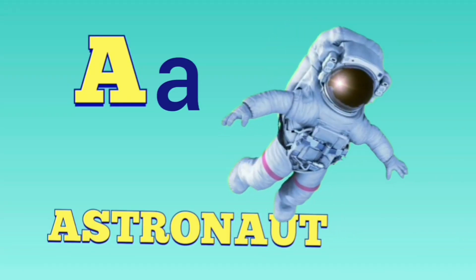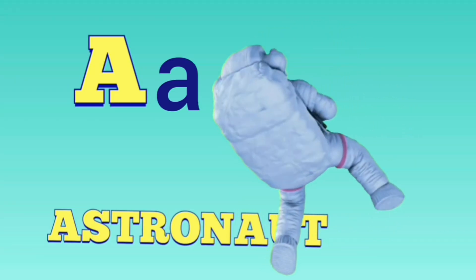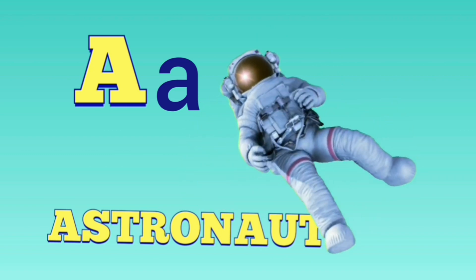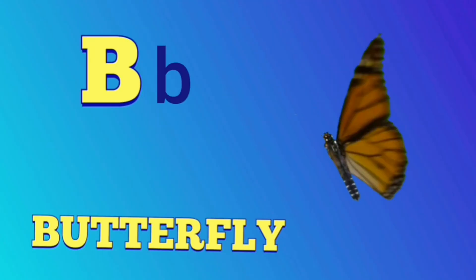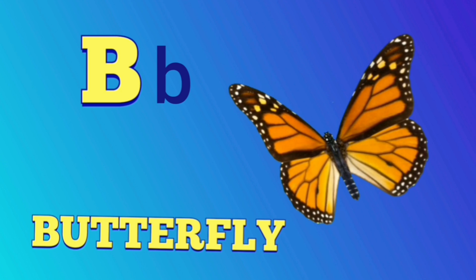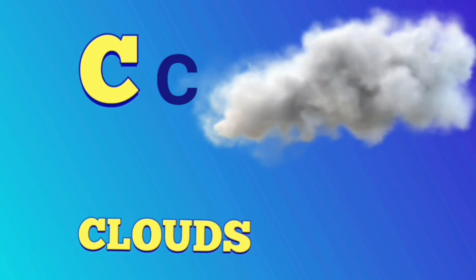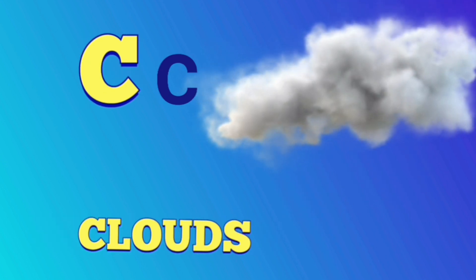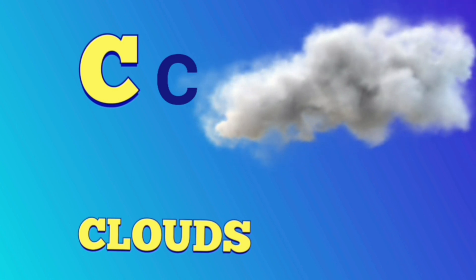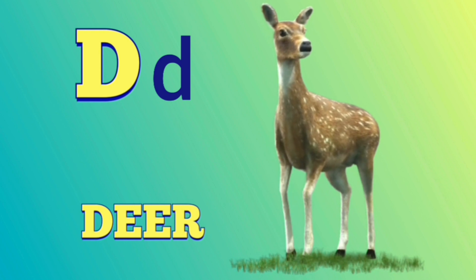A is for astronaut - astronaut. B is for butterfly - butterfly. C is for clouds - clouds. D is for deer - deer.